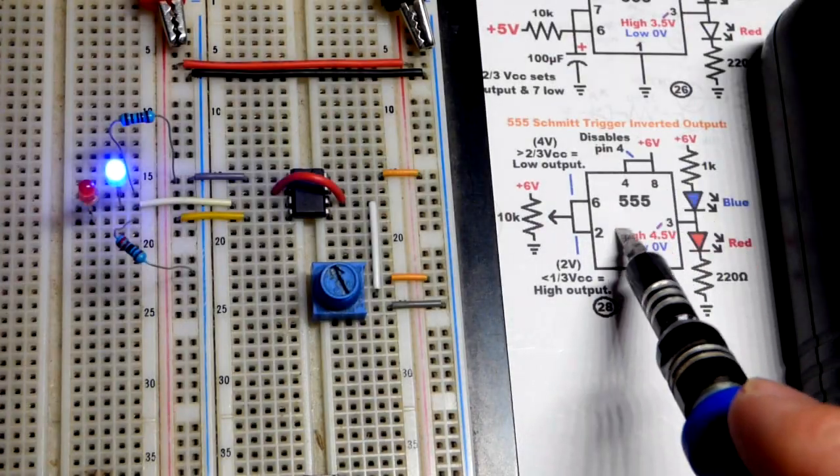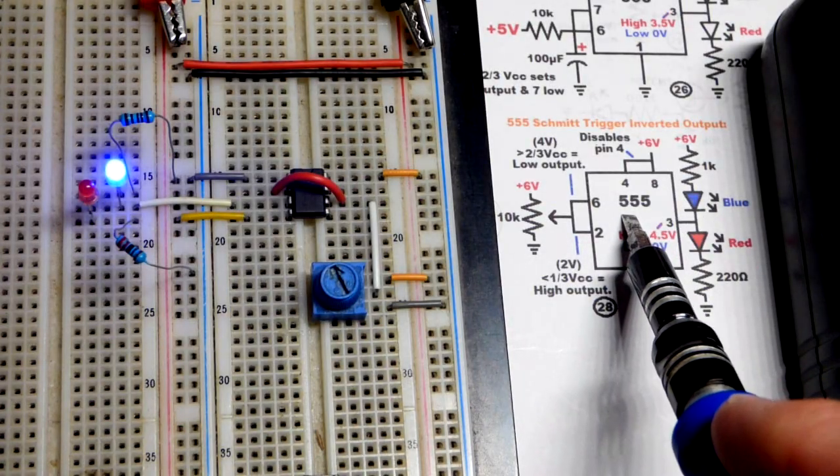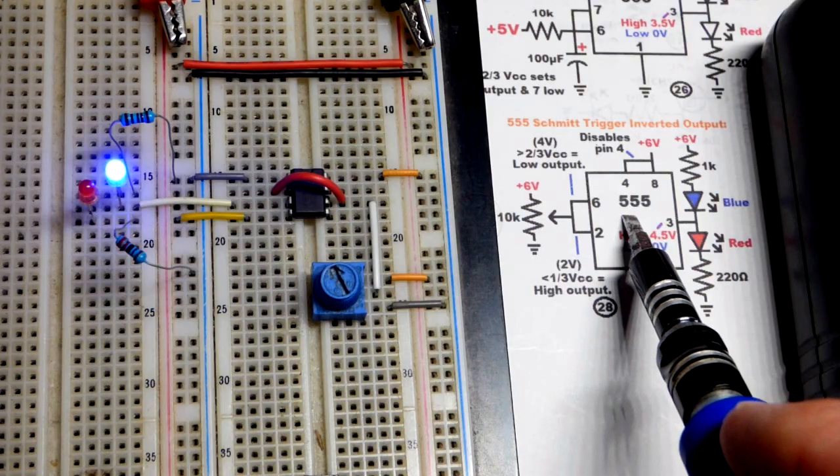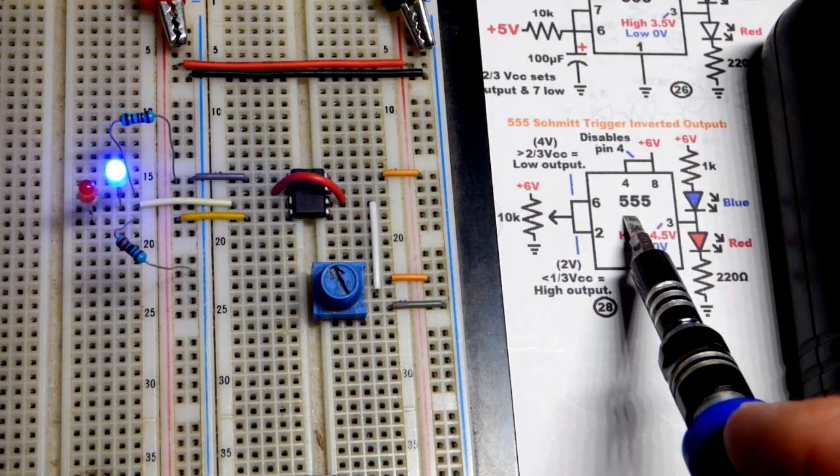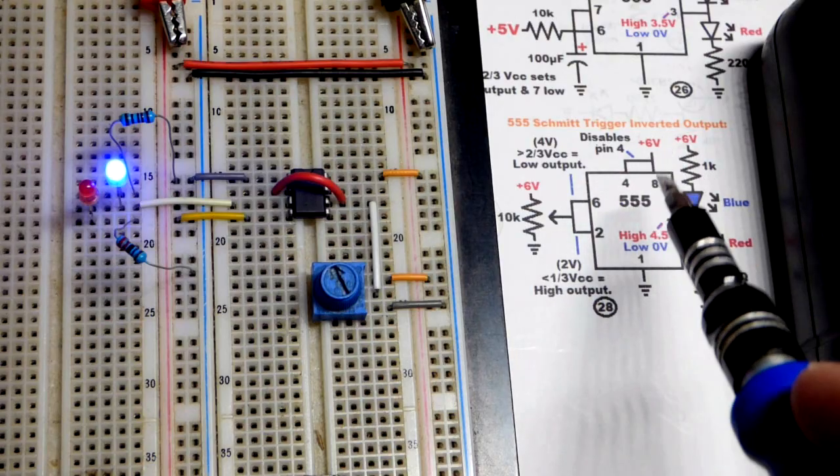So now in recent videos we looked at the three basic modes for the 555 timer. There was bi-stable, monostable, and astable. And that's generally what you see in circuits.